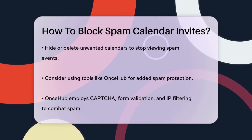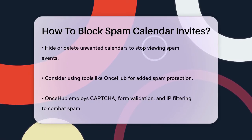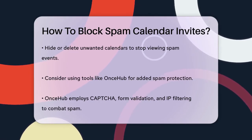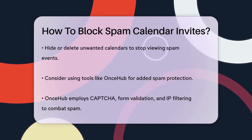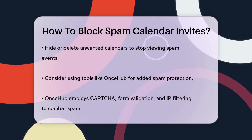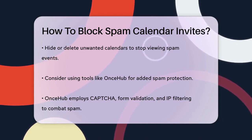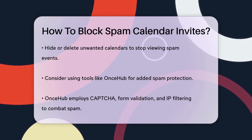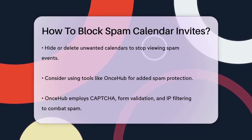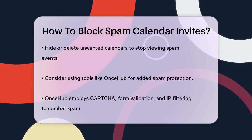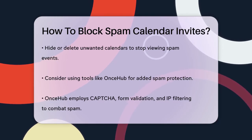Another effective method is to use tools like OnceHub, which implements various security measures to stop calendar spam. OnceHub uses CAPTCHA challenges to ensure users are human, form validation to check for valid data, and IP address filtering to block known spam IP addresses. It also uses rate-limiting mechanisms to prevent bots from overwhelming the booking system.